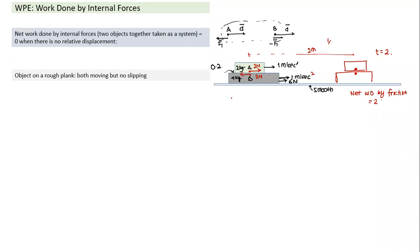So when I take them as a system, work done by internal forces is zero. I can ignore friction when calculating the change in kinetic energy. All work is done only by external forces.